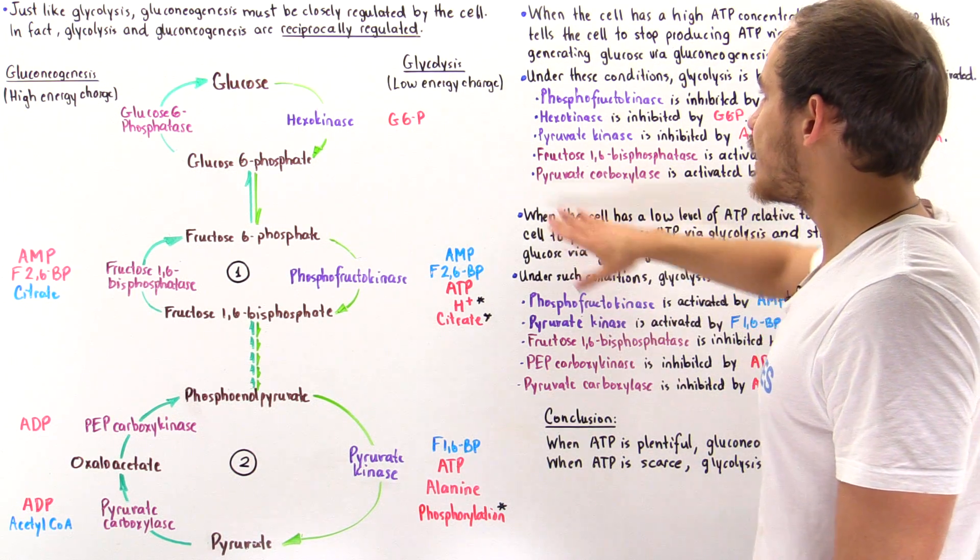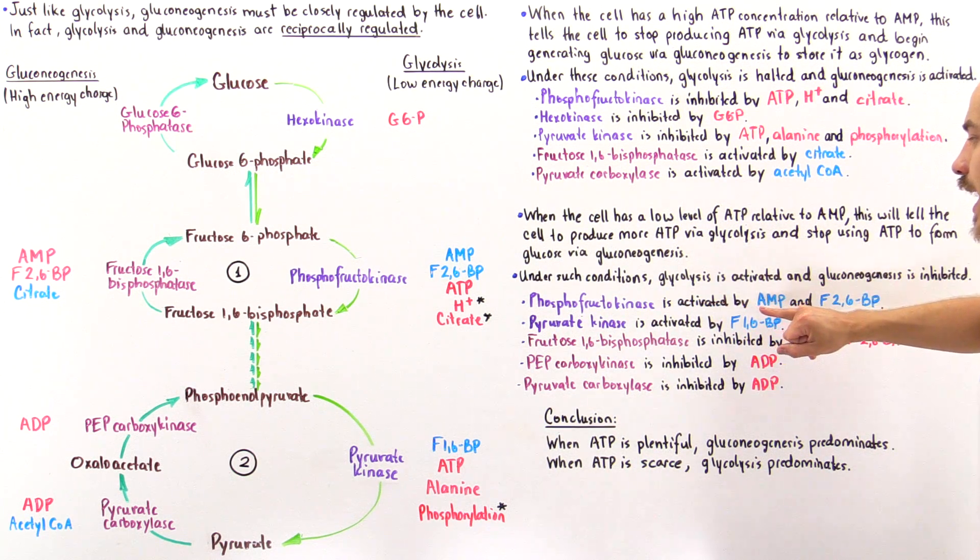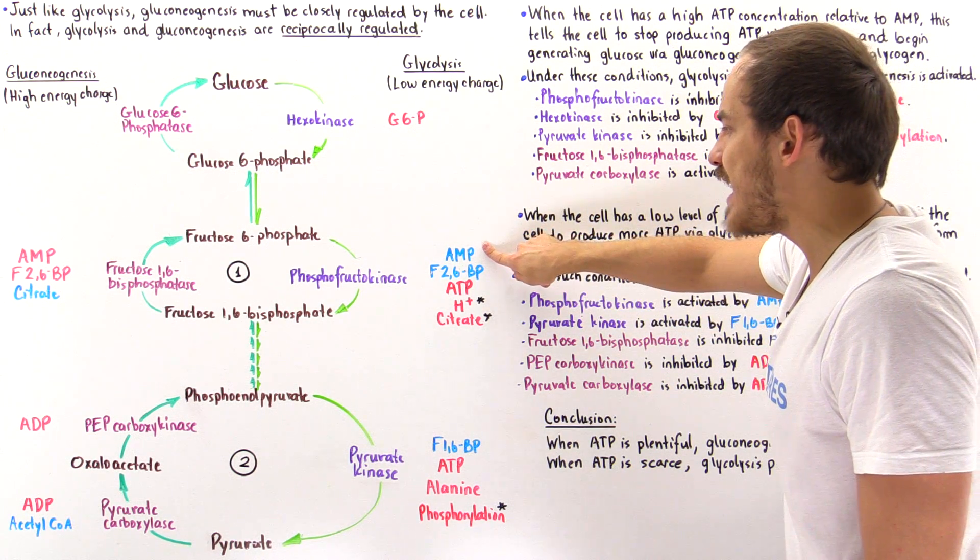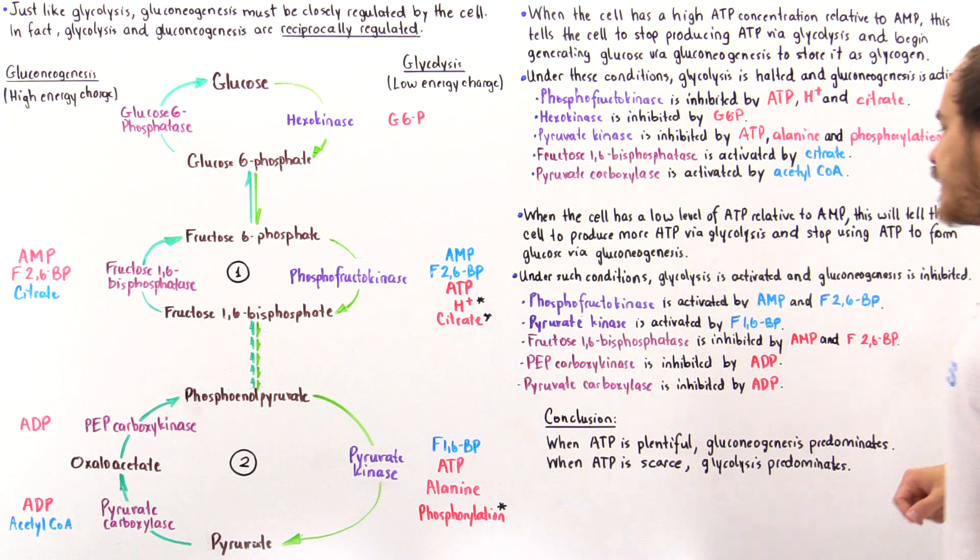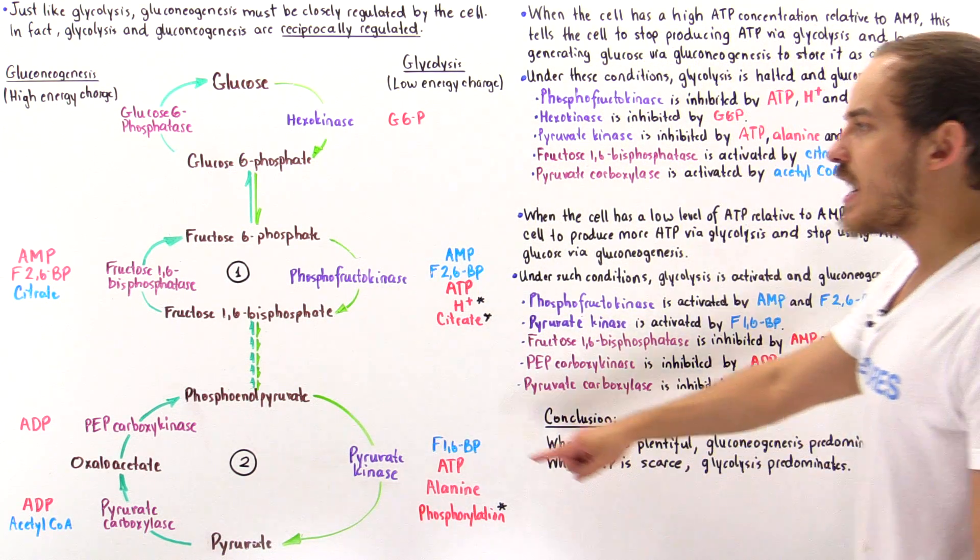And so we see that on the glycolytic pathway, phosphofructokinase is activated by AMP and F2,6-BP, while pyruvate kinase is activated by fructose 1,6-bisphosphate.